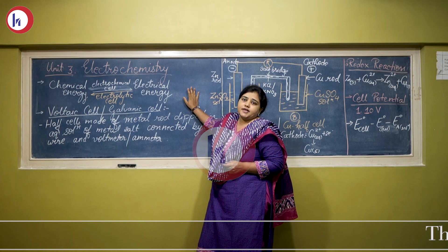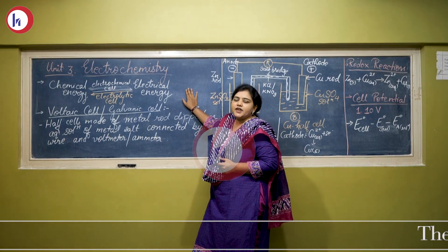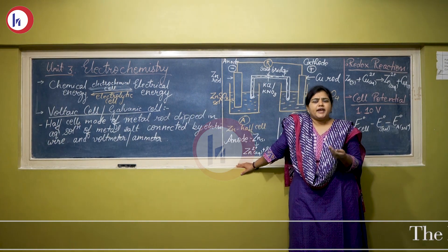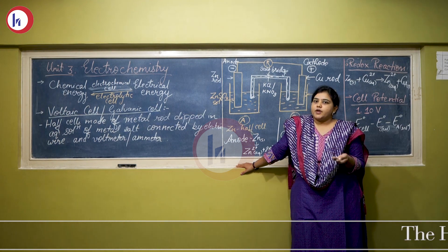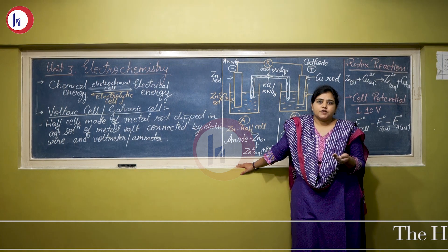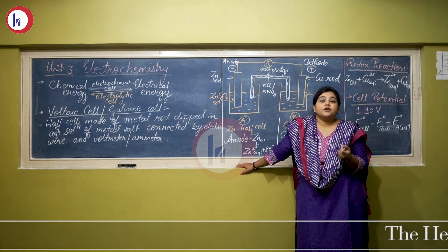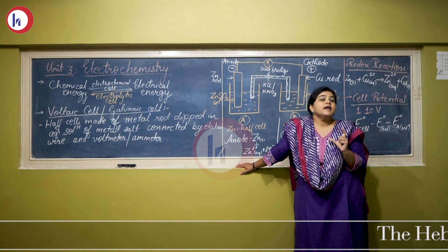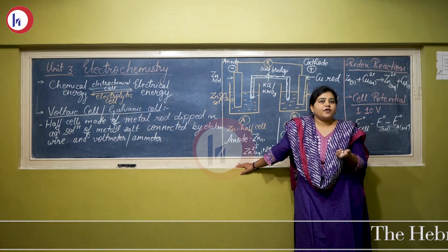While we are studying electrochemistry, its use is found in the production of many chemicals like sodium, chlorine gas, and sodium hydroxide. As well as in practical applications, it is used in the production of batteries, fuel cells, remote control cells, and car battery cells — that is where this branch of chemistry is used.